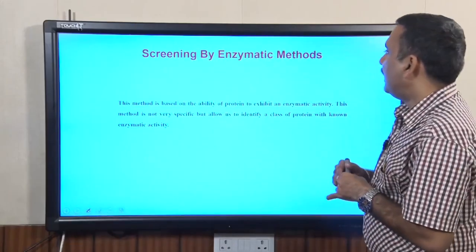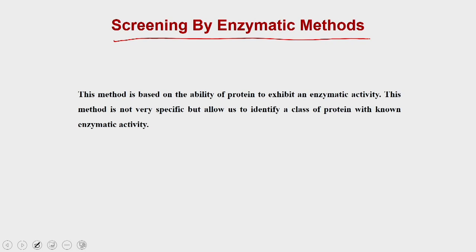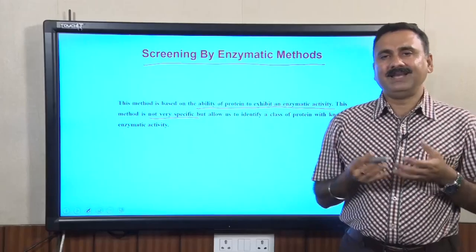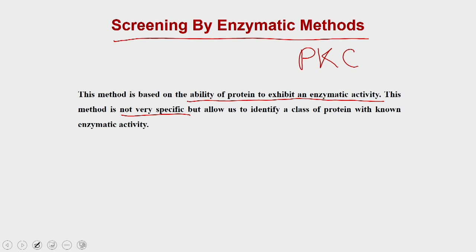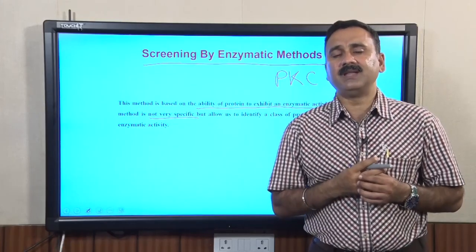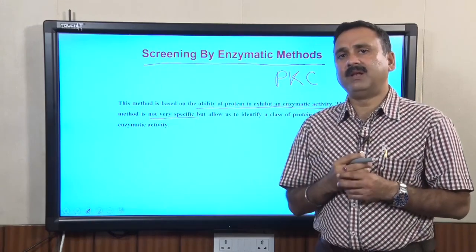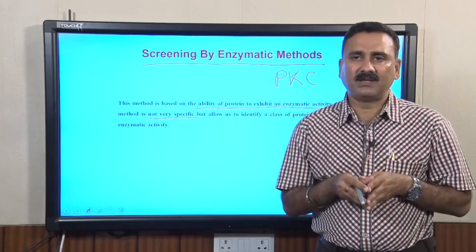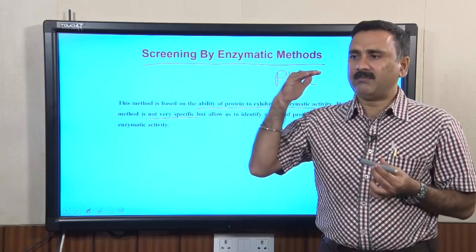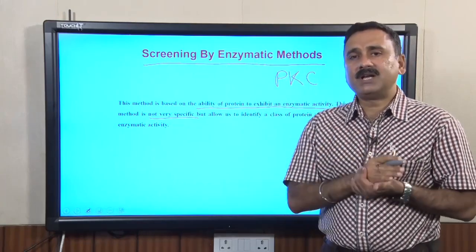The third method is the enzymatic method, which is based on the ability of the protein to exhibit an enzymatic activity. One major drawback of this approach is that it is not very specific. For example, if you are looking for a kinase such as PKC (protein kinase C) and you do a kinase activity assay, other enzymes such as P38 MAPK and other classes of kinases will also catalyze the reaction. That is why the background is very high with this approach and you may have a large number of false positives.